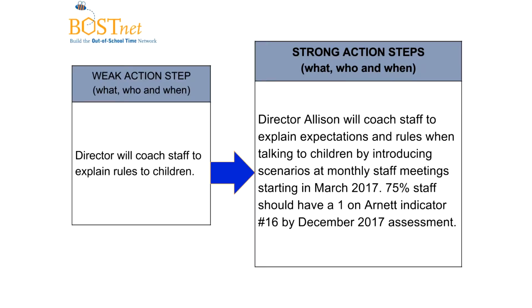A way to adjust this to make it a strong action step, thinking about what, who, and when: Director Allison will coach the staff to explain expectations and rules when talking to children by introducing scenarios at monthly staff meetings starting in March 2017. 75% of staff should have a 1 on Arnett indicator number 16 by the December 2017 assessment. It specifies who is responsible — Director Allison — what she'll be doing, which is coaching staff with scenarios, when it will happen at monthly staff meetings starting in March, and the end result which will be measured in the Arnett assessments likely in November and December.